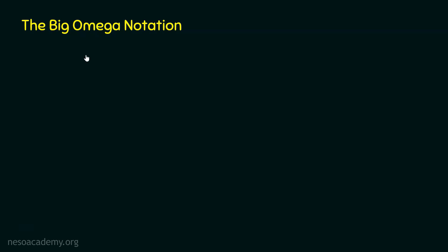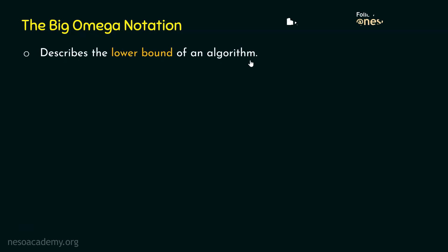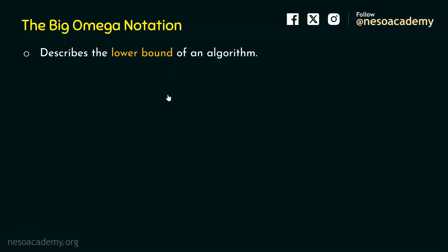So what is the big omega notation? The big omega notation describes the lower bound of an algorithm. This notation helps in describing the lower bound of an algorithm. Now what is the meaning of lower bound? We learned that big O notation tells the upper bound of an algorithm.